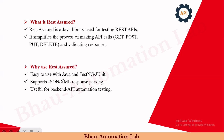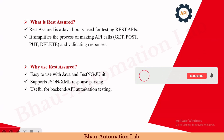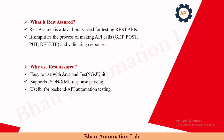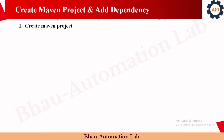REST Assured is easy to use with Java and TestNG — we are using the TestNG framework, which is the latest one, while JUnit is the older one. It also supports JSON and XML response parsing. Most of the responses nowadays come in JSON format. It is useful for back-end API automation testing purposes.